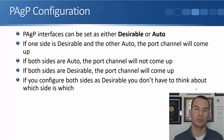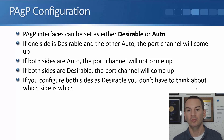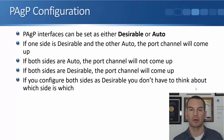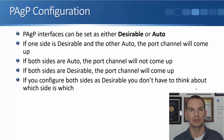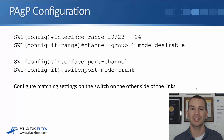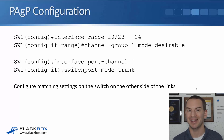With LACP the channel-group command uses either active or passive. The configuration for PAGP is the same, but rather than active or passive, we use desirable or auto. Similar rules apply: if one side is desirable and the other is auto, the port channel comes up; if both sides are auto, it won't; if both sides are desirable, it will. If you are going to use PAGP, set both sides as desirable so you don't need to worry about which is desirable and which is auto.